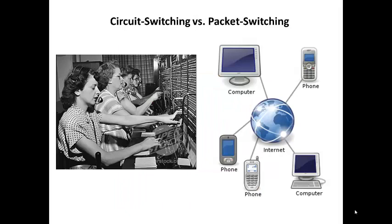Circuit-switched networks such as telephone calls require dedicated point-to-point connections during communication. Packet-switched networks move data in separate small blocks based on the destination address in each packet — when received, the packets are reassembled in the proper sequence to make up the message. It's analog versus digital. Information would technically be available at all times, even if certain sections are destroyed.